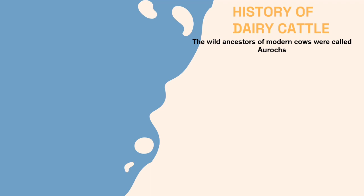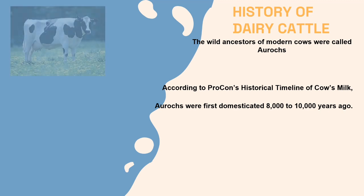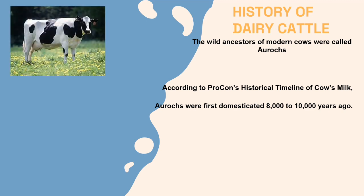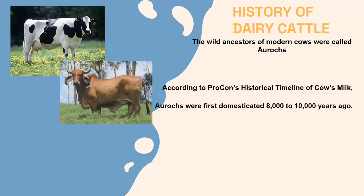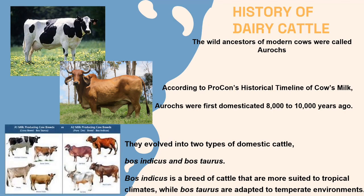Next is about the history of dairy cattle. The wild ancestors of modern cows were called aurochs. According to Procon's historical timeline of cow's milk, aurochs were first domesticated 8,000 to 10,000 years ago. They evolved into two types of domestic cattle: Bos indicus and Bos taurus.